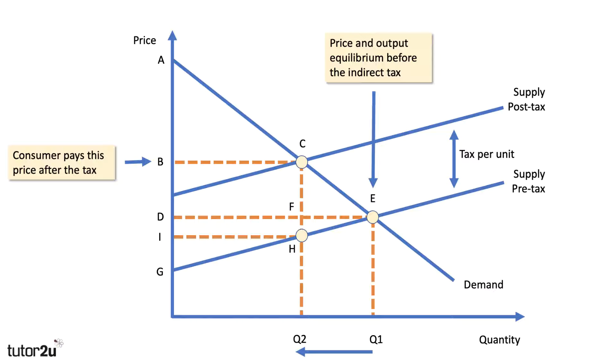Now, crucially, the consumer will then pay a higher price because the supplier is able to pass on quite a bit of the tax to the consumer. So after the tax, there's a new equilibrium at point C, and the price goes up from D to B. So the consumer pays this price, price B, after the tax.